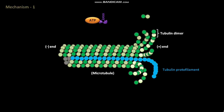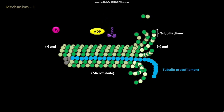The bound ATP then undergoes hydrolysis to produce ADP and Pi, which are then released. The member of the kinesin-13 family then again binds to the tubulin dimer in the tubulin protofilament and again facilitates the removal of the terminal tubulin dimer.